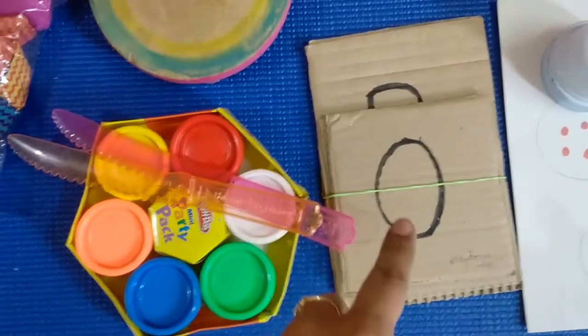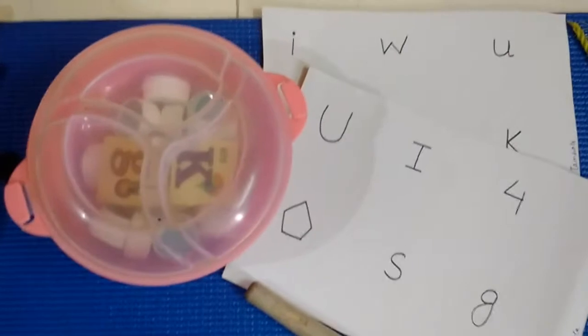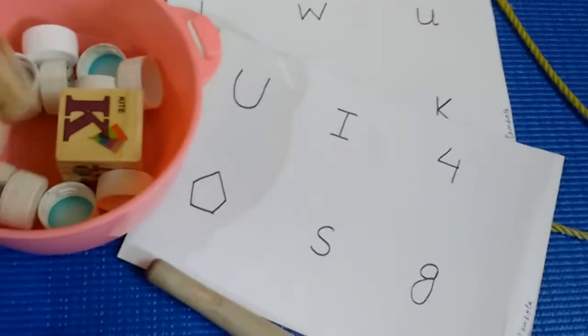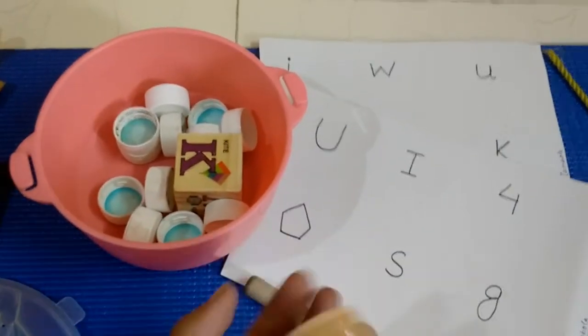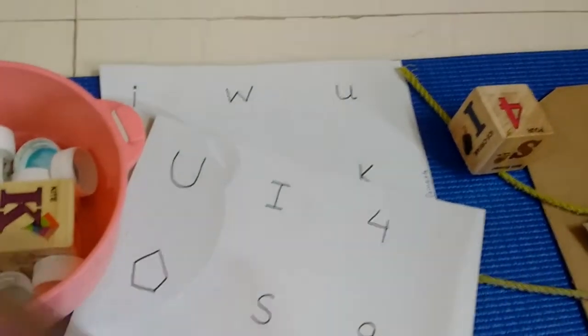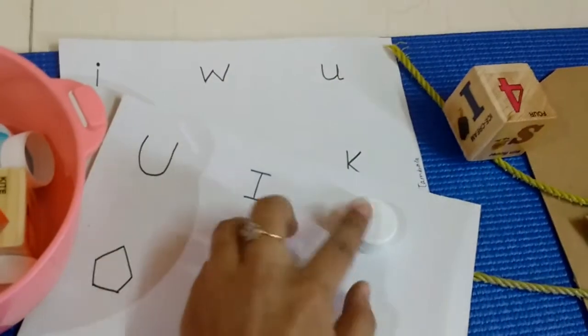This is called cube tambola. I have these cubes and created these cards. There will be two players who have to roll the dice. Whatever comes, they have to put the bottle cap over this. For example, four has come, so you put a cap over this. Whoever completes the card wins.